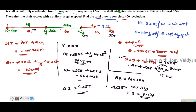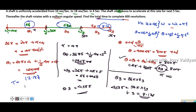The total time to complete 400 revolutions is the sum of all three stages: 4 seconds plus 5 seconds plus 8.17 seconds, giving a total time of 17.17 seconds.